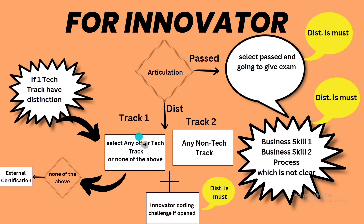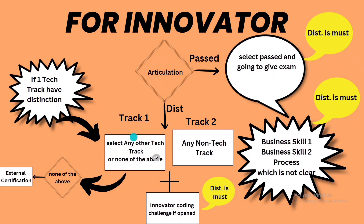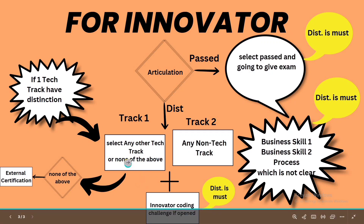In Track 1 there is only a tech track option — there are no non-tech track options. You can select any tech track you are comfortable with. If you are not interested in any tech track, you can simply click 'None of the Above,' which tells the form you are not interested in another tech track. If you select 'None of the Above,' you have to do an external certification — that is the Unit external certification.